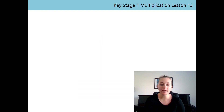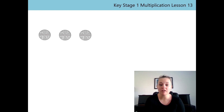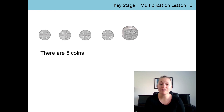So let's work out how many coins we have. We have one 5P, two 5P, three 5P, four 5P, and a 10P coin. So there are five coins altogether. Can you say that sentence for me? Fabulous — there are five coins.